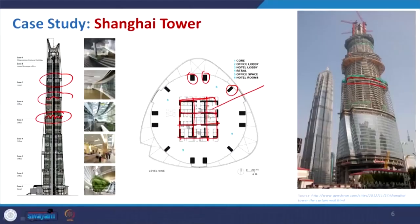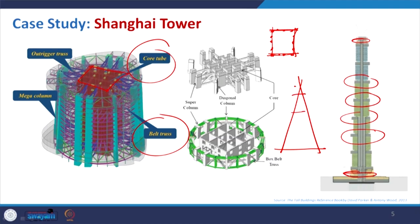Coming to the next example, but before that let us also discuss the profile of the Shanghai Tower: it started with a larger cross section and at certain heights the cross section gets reduced. This is to tackle lateral load — a pyramid or conical shape performs better against wind load, and the reduction in mass at upper storeys helps make the structure more stable. So the combination of tube, core tube, shear wall tube, outrigger trusses, and mega columns at different portions is really making the structure stable.